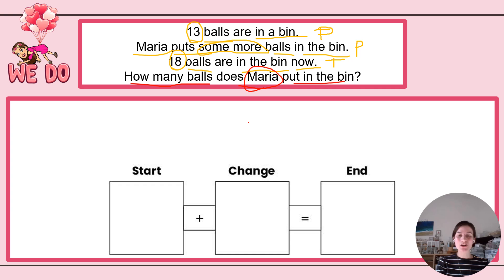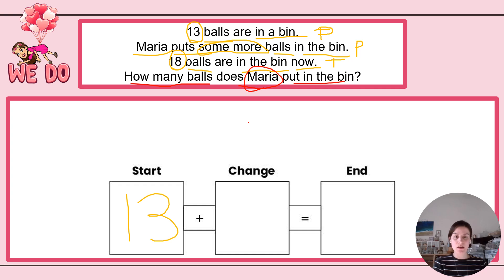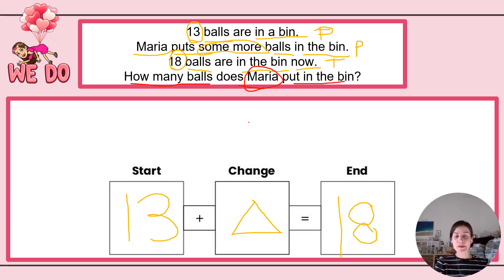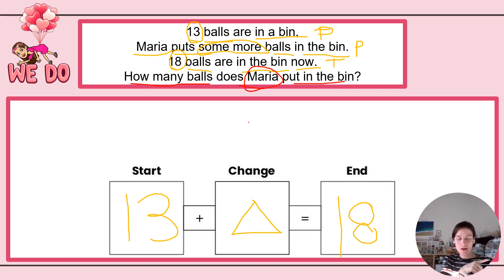All right, you should have the start-change-end strategy drawn. Let's go ahead and plug in what we've been given. I know that I'm starting with 13 balls. The change is going to be however many balls Maria puts in the bin, but I don't know that number, so I'm putting a triangle here for my unknown part. I will end up with 18 balls total — that's my end. Now, maybe you want to subtract like I did in I-do time. Draw 18 circles and take away 13 by flipping this strategy to where it reads 18 minus 13 equals what?